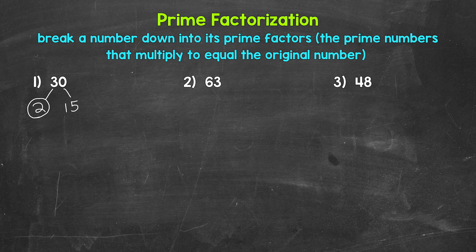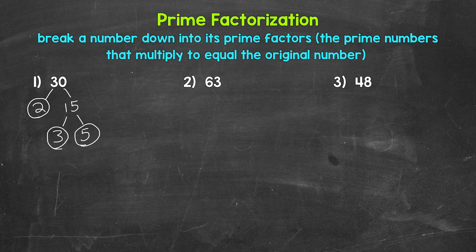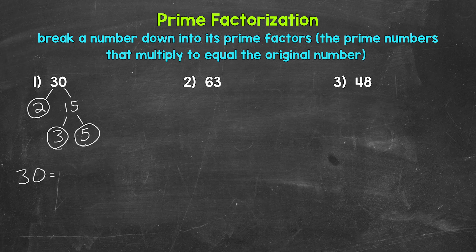15, on the other hand, is a composite number. We can continue to break that down. 3 and 5 are factors of 15 — 3 times 5 is 15. Both 3 and 5 are prime numbers, so we are done. We cannot break this down any further. This is the prime factorization of 30: 30 equals 2 times 3 times 5. 2 times 3 is 6, times 5 is 30, so we are correct.